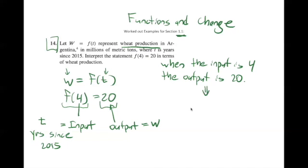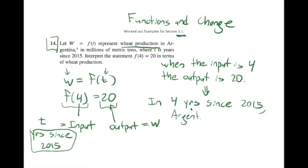We want to replace input with years since 2015. So here we could say: four years since 2015, Argentina's wheat production is 20 million metric tons.